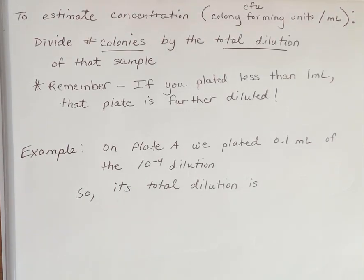Now we want to estimate the concentration of cells in our sample, so the number of colony forming units per milliliter. And we do that by dividing the number of colonies that we see on the plate by the total dilution of that sample.